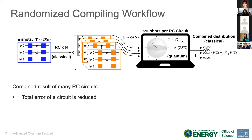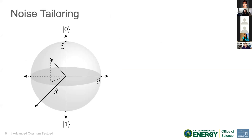I'll outline how and why that can occur. This occurs because we are tailoring coherent errors into stochastic errors. To understand this, consider a schematic of a single qubit state on the Bloch sphere. This qubit state could be after a sequence of gates applied to a single qubit, but before measurement. So in the ideal case, shown here in black, we have a vector on the Bloch sphere.